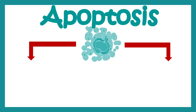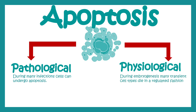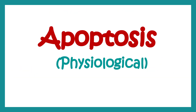Apoptosis can broadly be classified into two subtypes: pathology-associated apoptosis, which occurs during infection or other pathological situations, and physiological apoptosis, which occurs during development. Apoptosis is actually a key regulator of development.